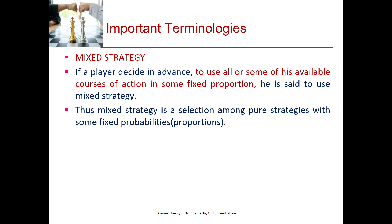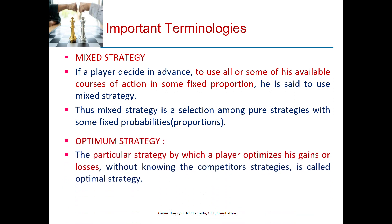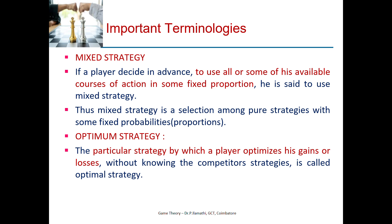In mixed strategy, the player has to use all or some of his available courses of action in some fixed proportion so as to maximize his profit or minimize his loss. For example, if there are five times he has to play the game, two times he may use his first strategy, one time the second strategy, and two more times his fourth strategy, and so on. The optimal strategy is the particular strategy by which a player optimizes his gains or losses without knowing the competitor's strategies.